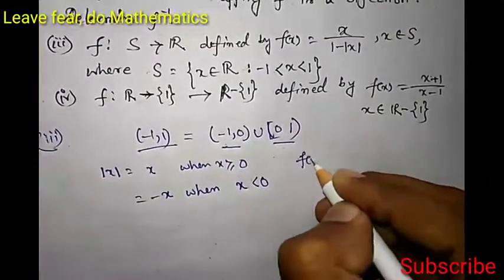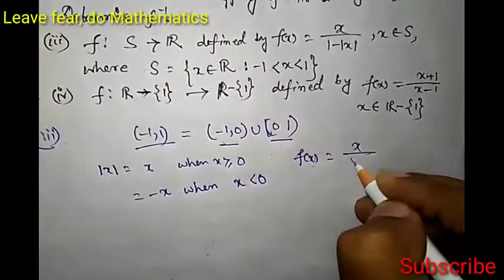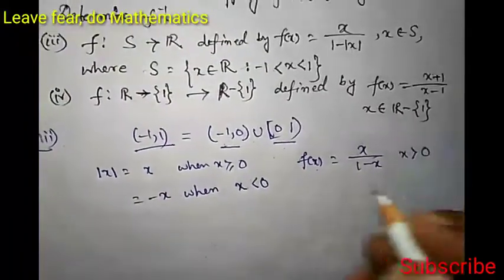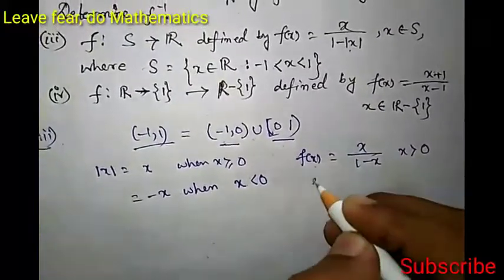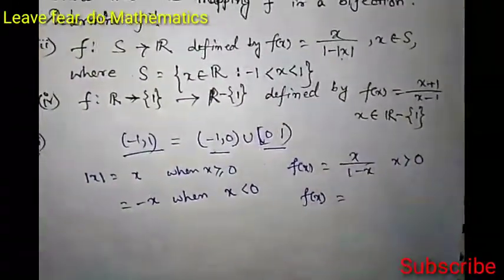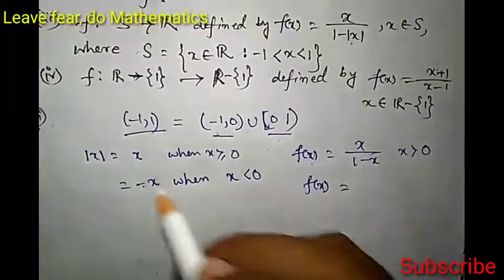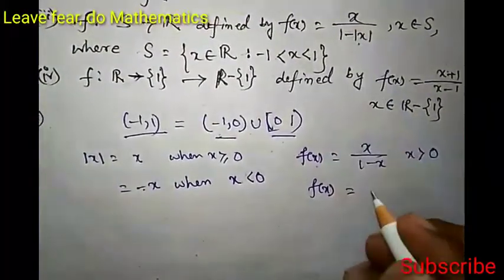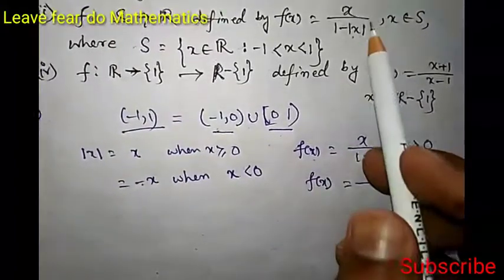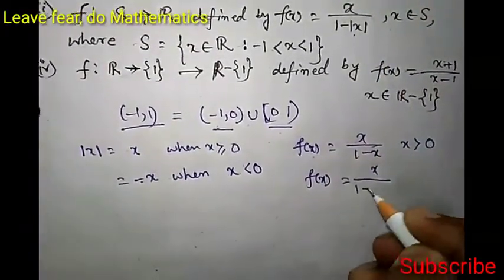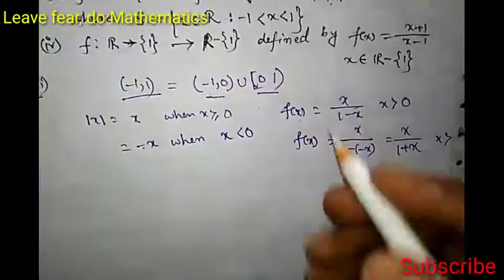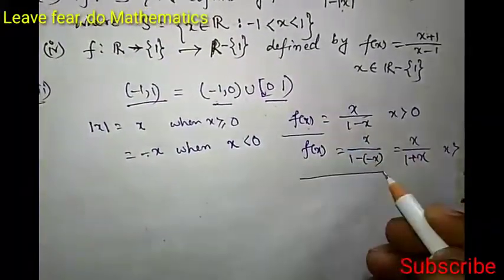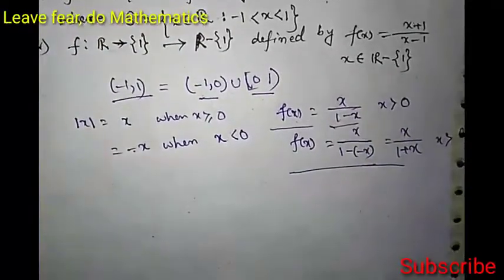So the definition of the function becomes: f(x) = x over (1 minus x) when x is greater than or equal to 0, since mod x equals x. And when x is less than 0, mod x is minus x, so f(x) becomes x over (1 plus x). These two cases are our definitions.